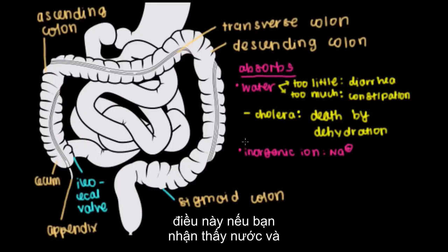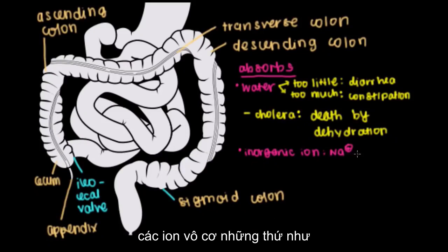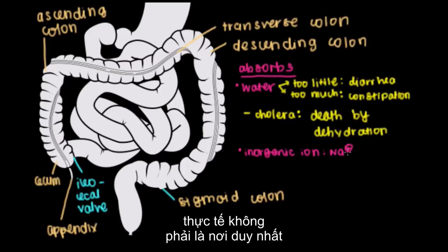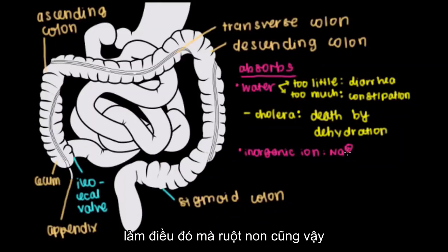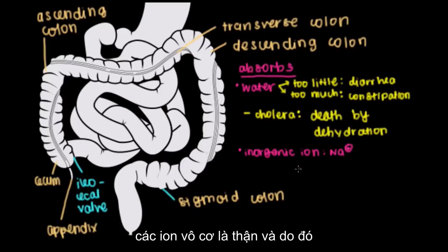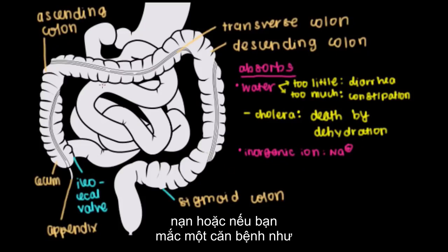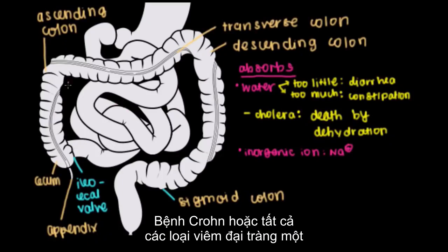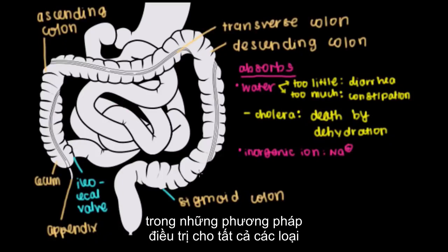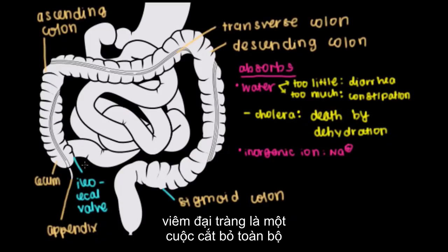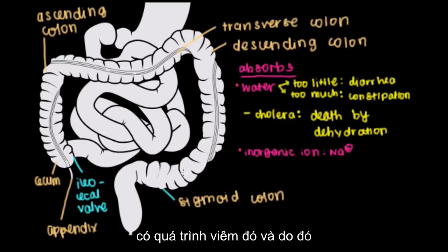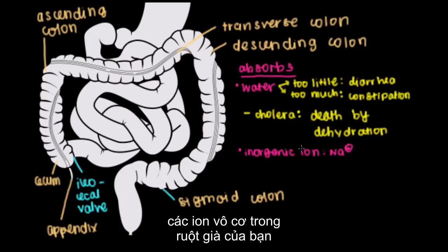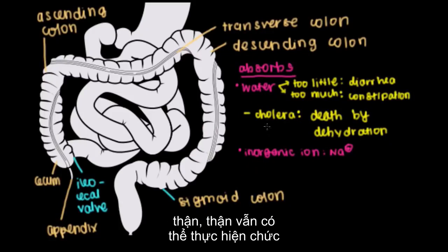Interestingly, if you notice water and inorganic ions like sodium, potassium, and chloride — the large intestine is not the only place that absorbs these, and neither is the small intestine. In fact, the organ most responsible for absorption of water and inorganic ions is the kidney. So if we lost the large intestine entirely — say from an accident or a disease like Crohn's disease or ulcerative colitis, where one treatment is a total colectomy — you won't be able to absorb water or inorganic ions there, but the kidney can still fulfill this function.